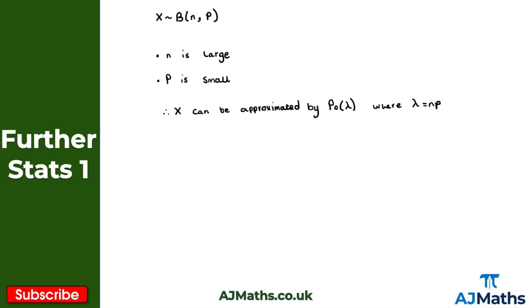A very common question is: what do we define as n being large and p being small? Truthfully there is no set definition. However, it is important to state that the larger the value of n and the smaller the value of p, then the better the approximation will be.